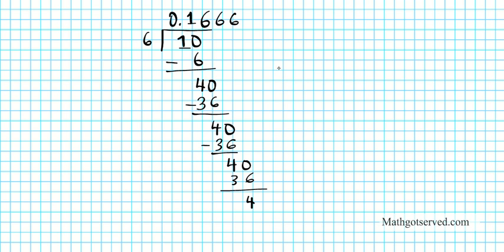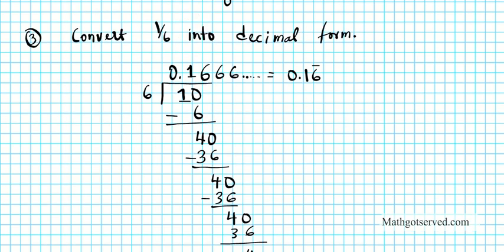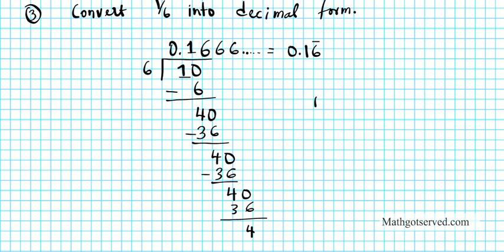So in this case, there's a special notation for it. We're going to use a bar notation. So 666 repeating is basically 0.16 bar. This bar means that this 6 repeats forever. So our answer, 1 over 6 in decimal form is equal to 0.16 repeating. So there you go. There goes your answer.